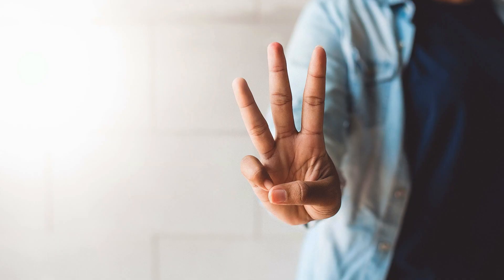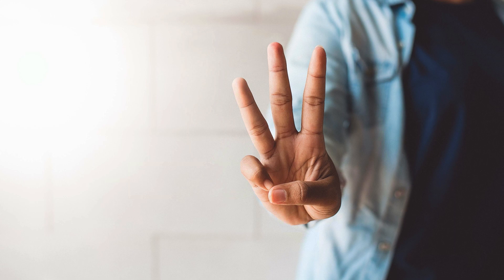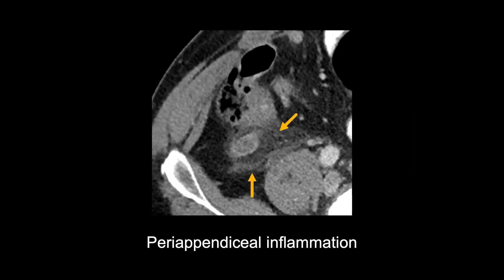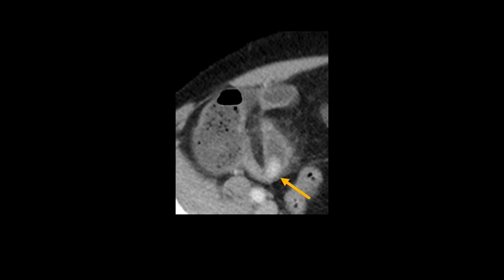There are three key imaging findings that will help you confidently diagnose acute appendicitis. First, look for a dilated, fluid-filled appendix that is greater than 6 mm in width. Second, look for inflammation around the appendix — that is, stranding or wavy lines and haziness of the fat surrounding the appendix. And third, look for a bright, calcified deposit or deposits in the appendix. This is the appendicolith, and it can obstruct the lumen and be the cause of appendicitis.